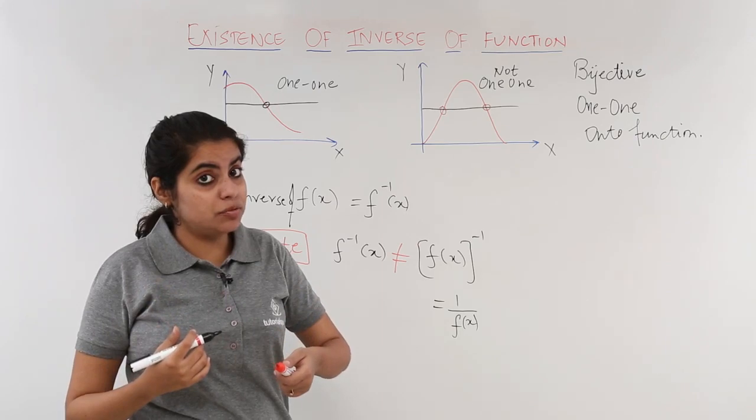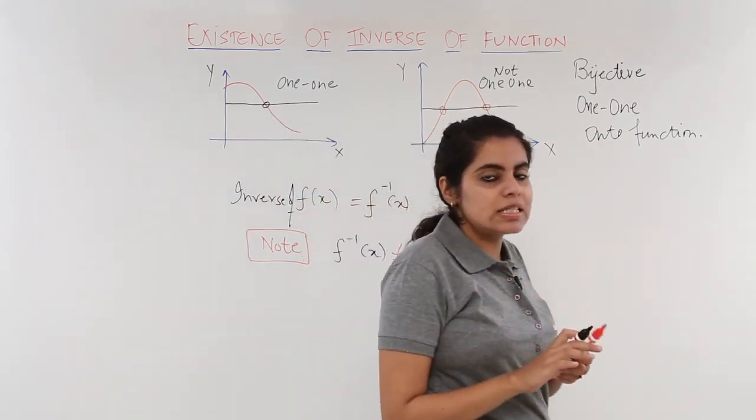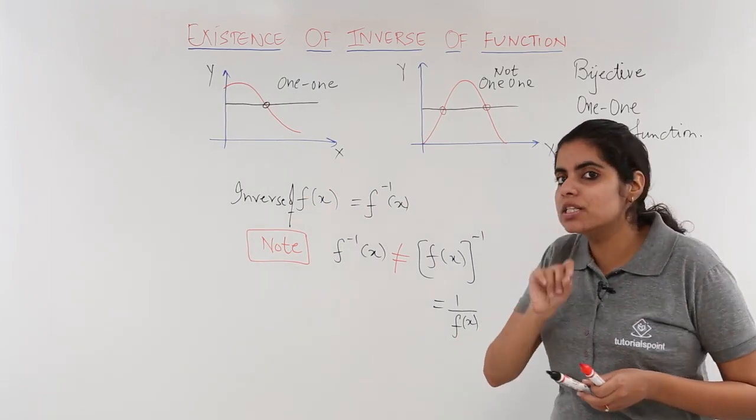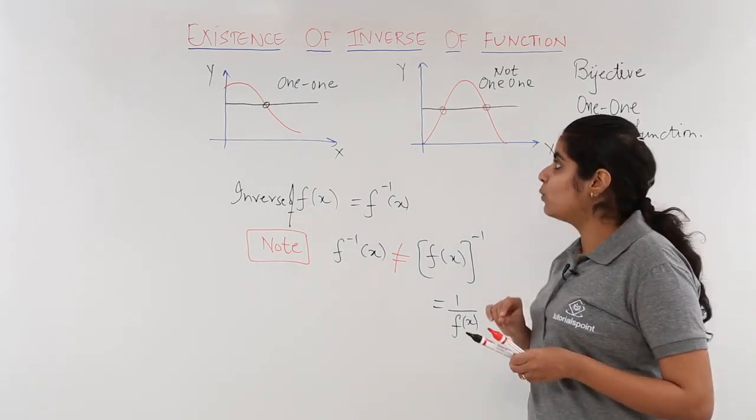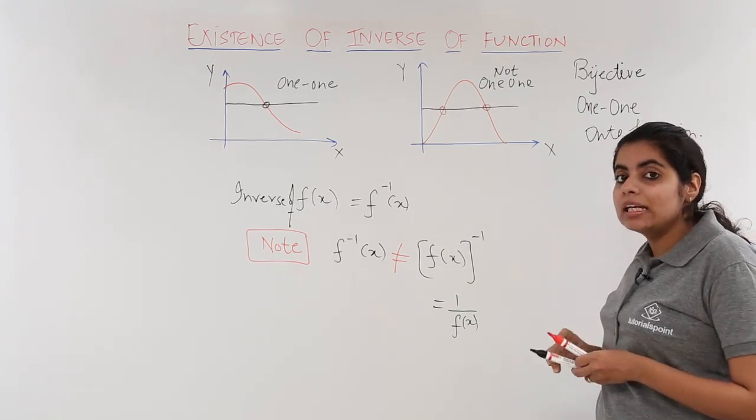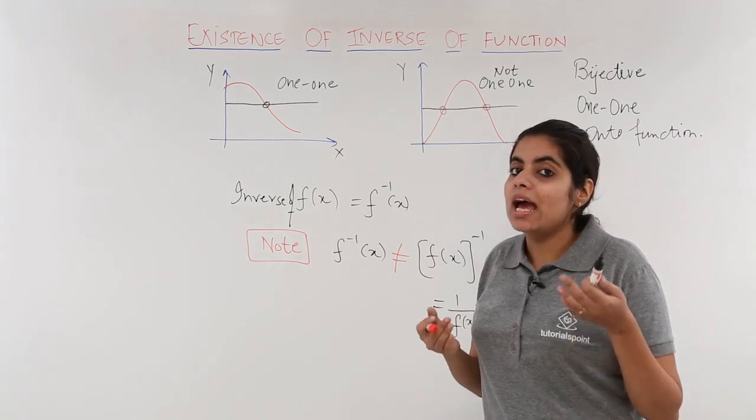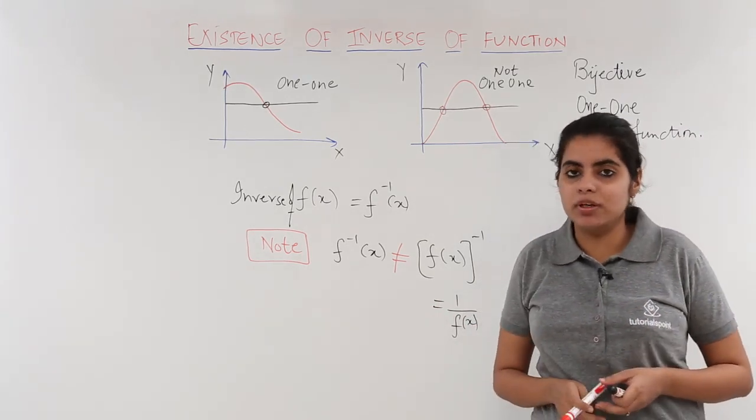So you understand that for the inverse to exist, what do I need to have? I need to have a bijective function and bijective function will basically help me in finding the inverse and that will give me an invertible function.